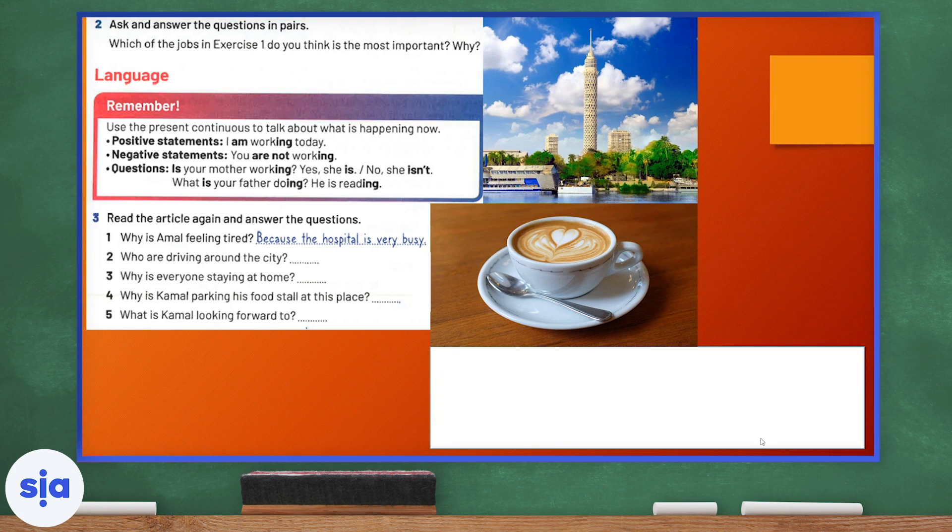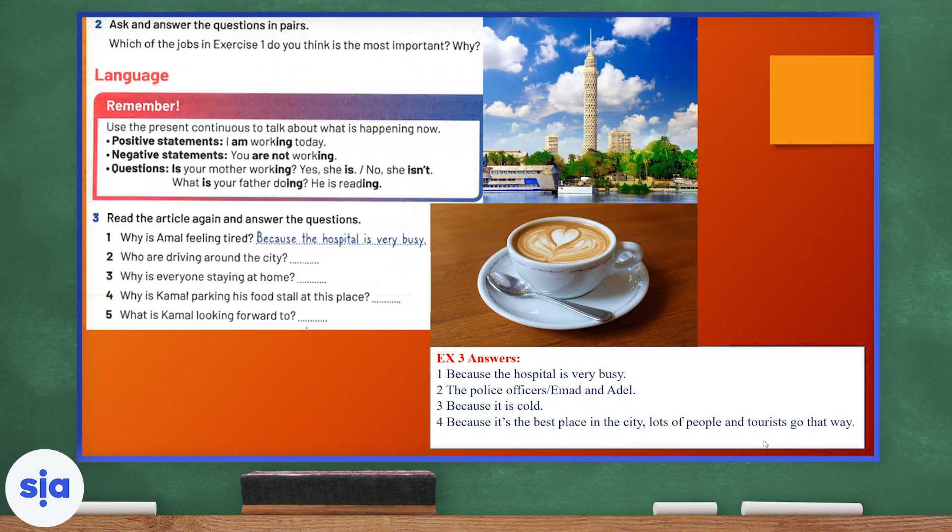Now, I want you to read the article again, if you need to, and answer the questions. Why is Amal feeling tired? The answer is because the hospital is very busy. Who are driving around the city? Of course. Number two, who are driving around the city? The police officers Ahmed and Adil. Number three, why is everyone staying at home? Because it is cold. Number four, why is Kamal parking his food stall at this place? Because it's the best place in the city, lots of people and tourists go that way. Number five, what is Kamal looking forward to? Kamal is looking forward to drinking some hot coffee.